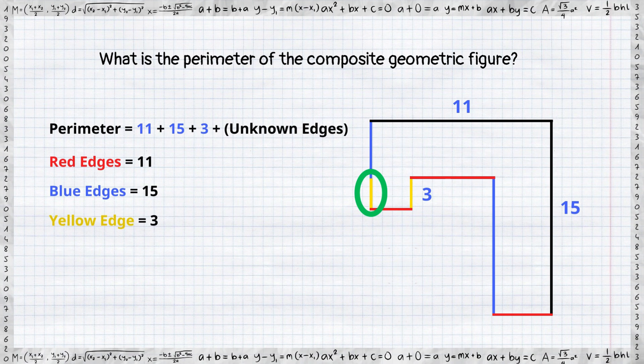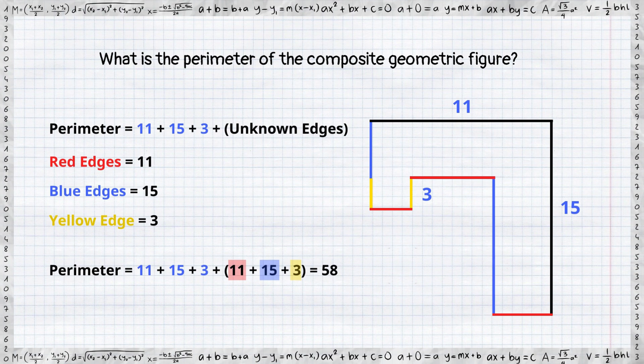Great, we have enough information to calculate the perimeter of the figure. And the perimeter of this composite geometric figure is 58.